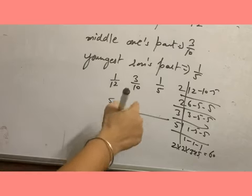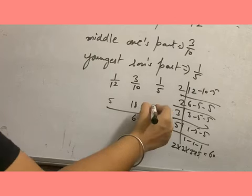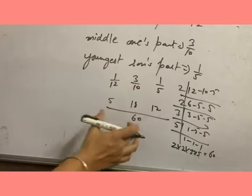60 divided by 12 is 5, 60 divided by 10 is 6, so 6 times 3 is 18, and 60 divided by 5 is 12. So here we have these numbers and according to these numbers we will arrange these fractions.